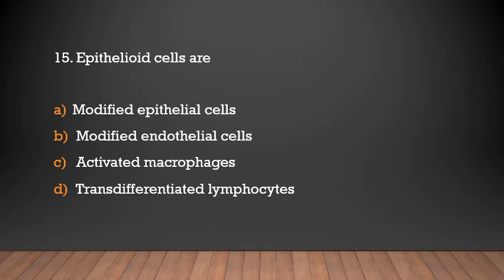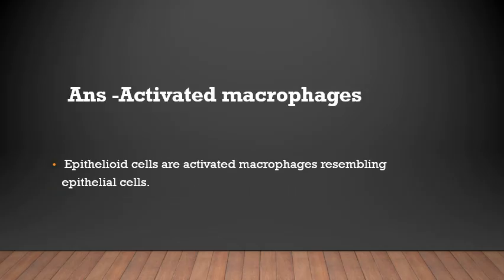Epithelioid cells are: modified epithelial cells, modified endothelial cells, activated macrophages, or transdifferentiated lymphocytes. The answer is activated macrophages. Epithelioid cells are activated macrophages resembling epithelial cells.